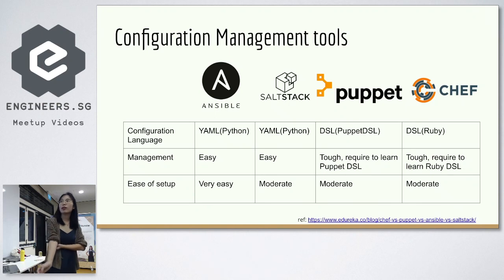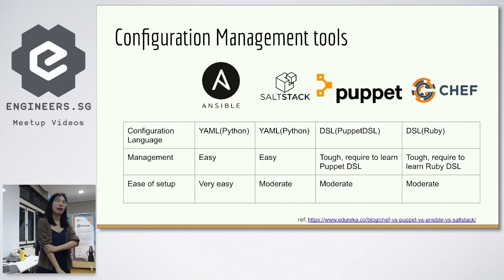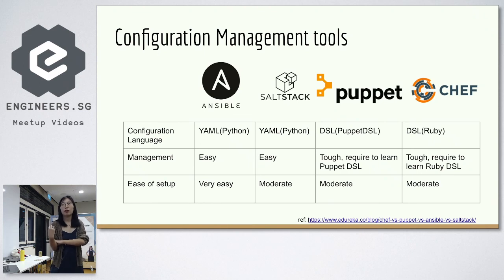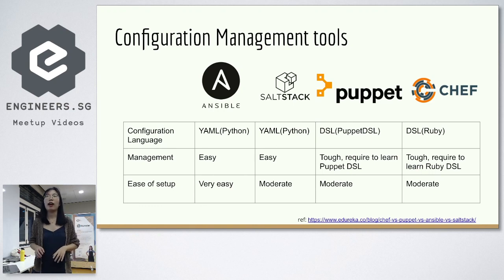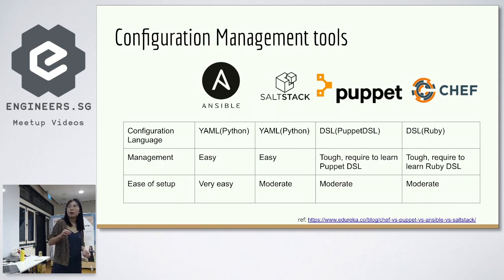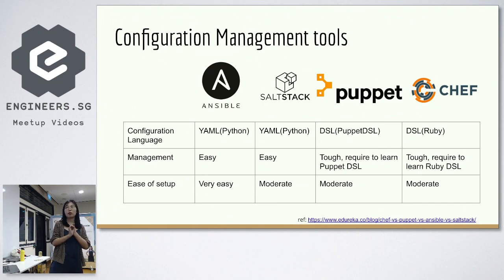In terms of setup, Ansible is very easy because it has a client-only architecture. For example, I can use my laptop as the Ansible management node — I just need to do a pip install Ansible, then I can get started and write configuration code. For SaltStack, Puppet, and Chef, they use a server-and-client architecture, meaning you have to configure both the server and the clients, so there's more to set up. You also need to ensure the communication between the server and the clients is set up properly.